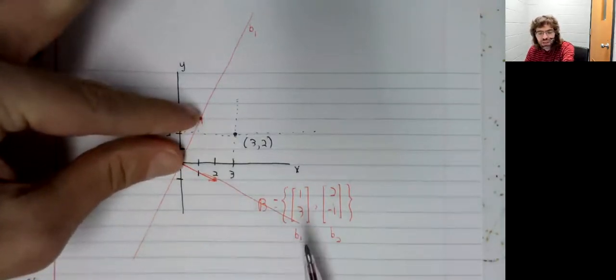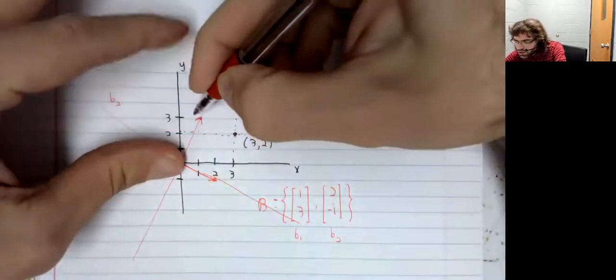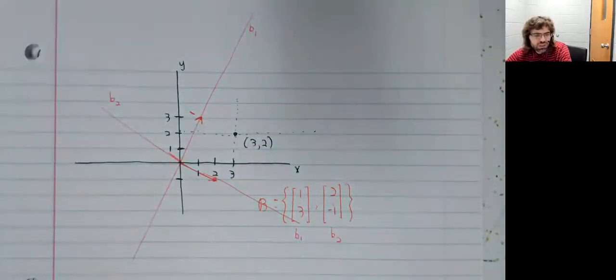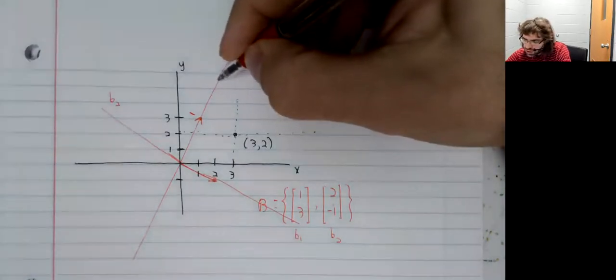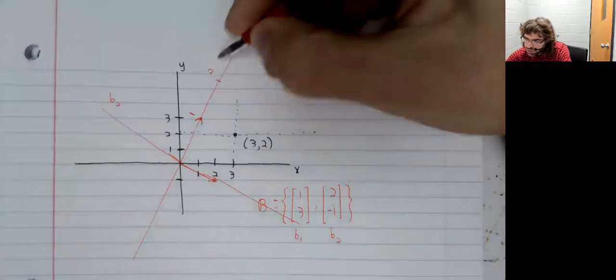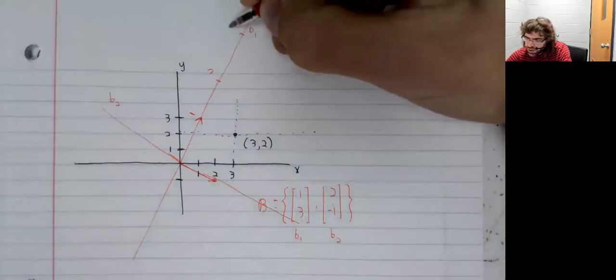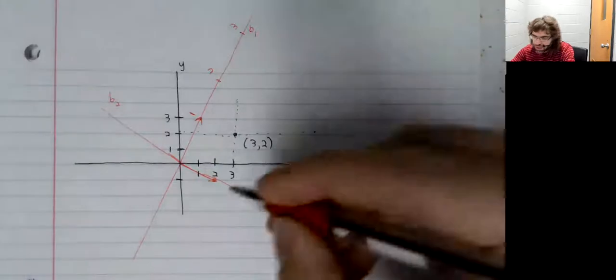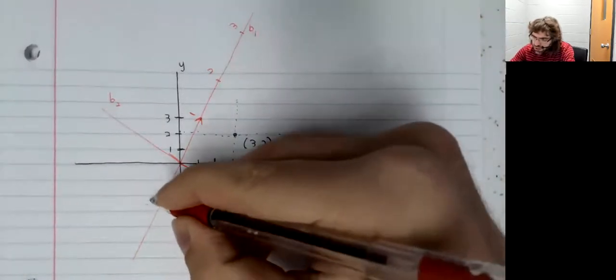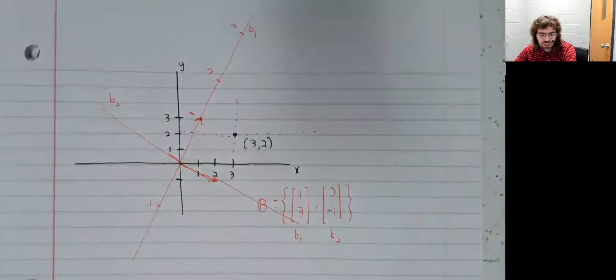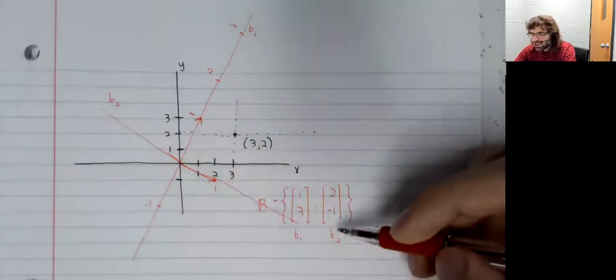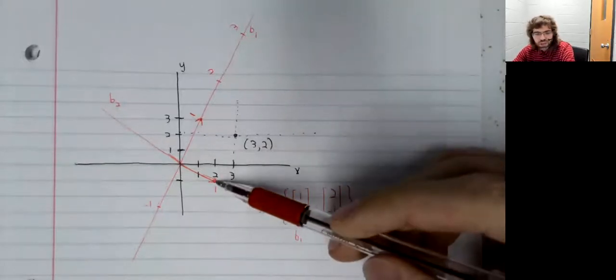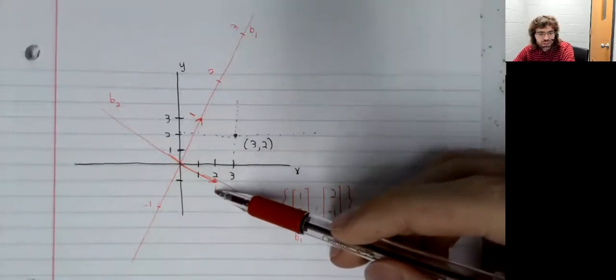So this length here, the length of b1, is going to represent one unit on the b1 axis. So there's one, there's two, there's three, negative one, and so on.